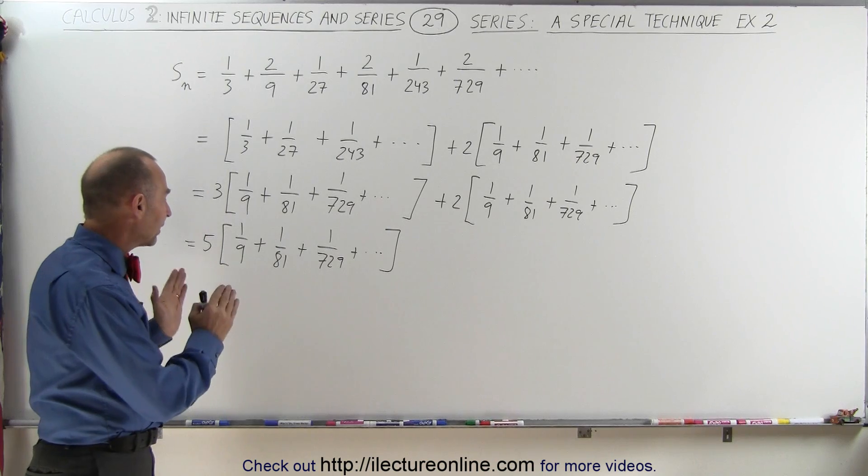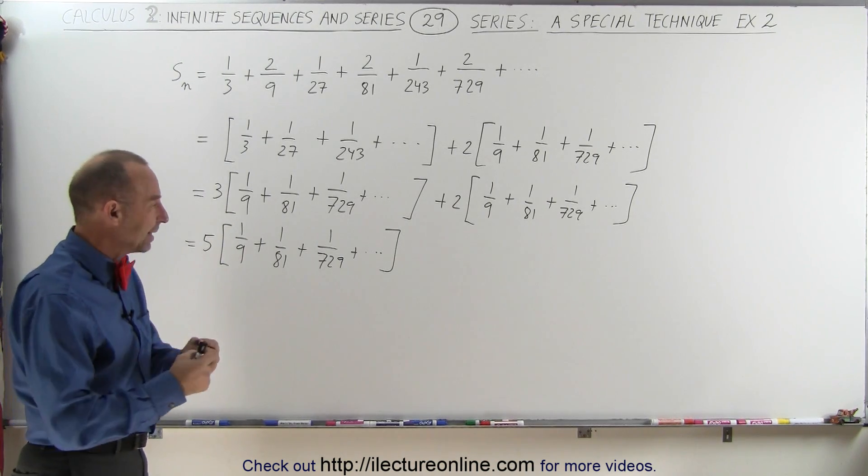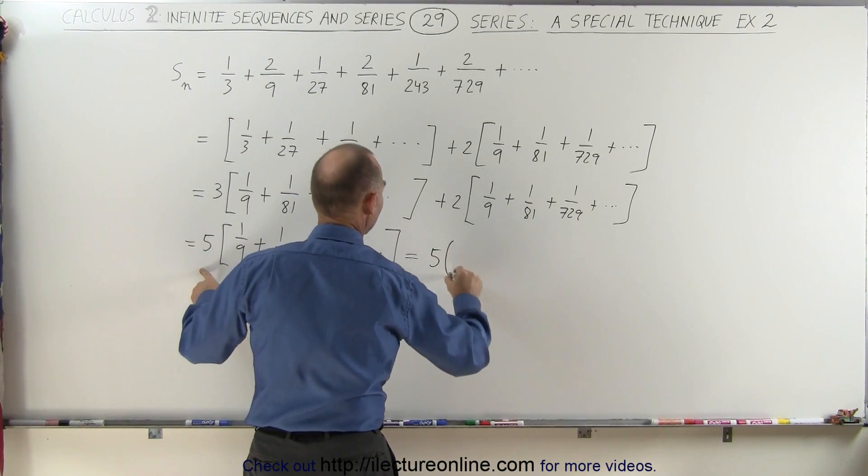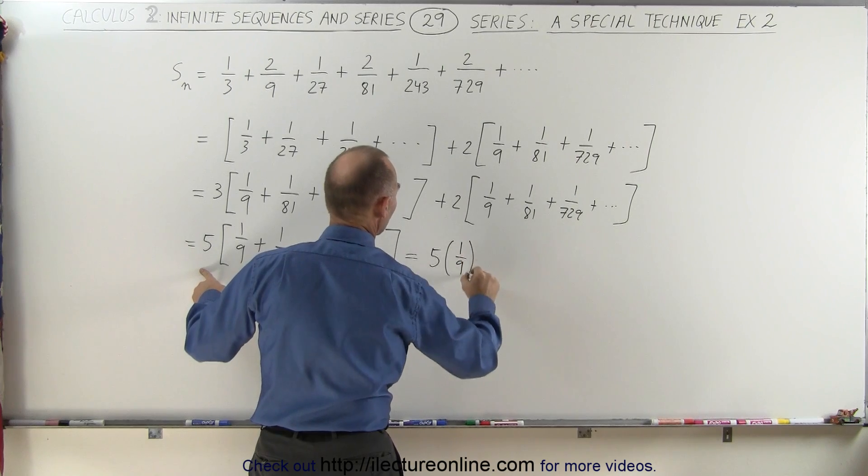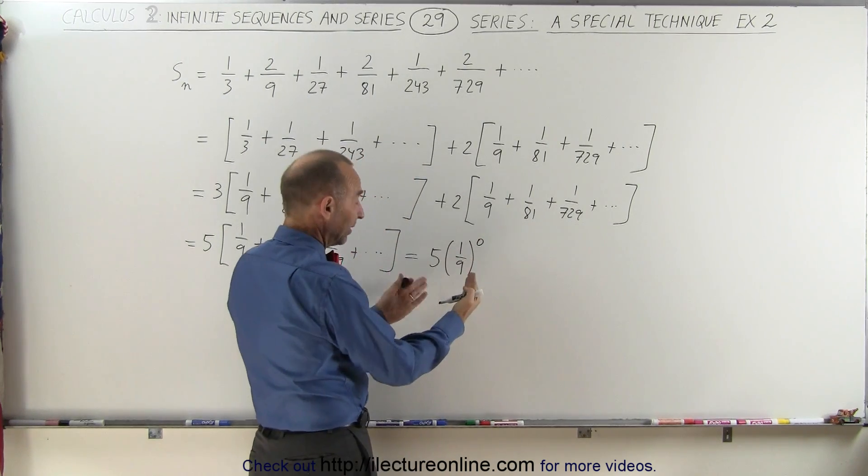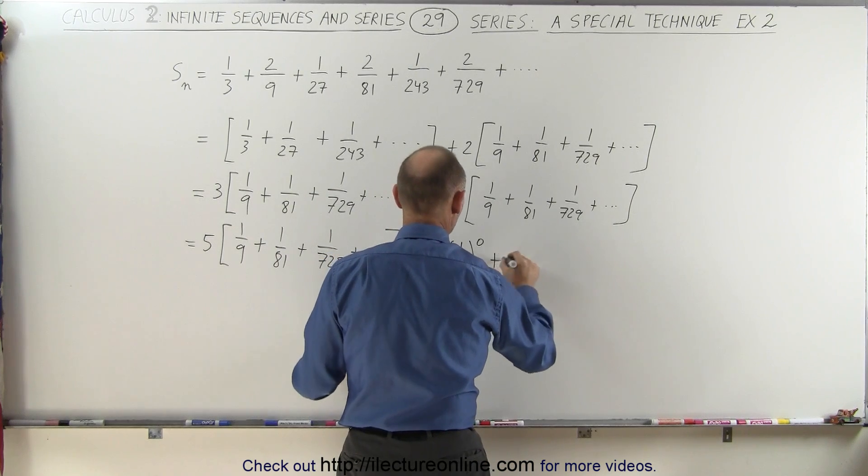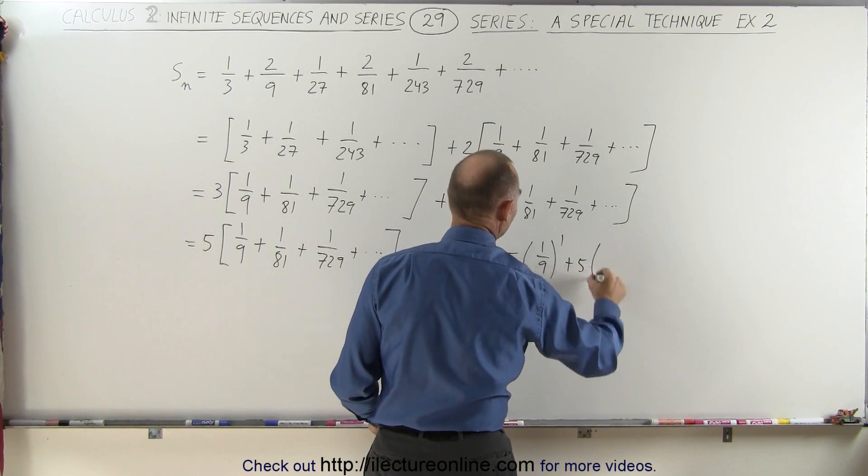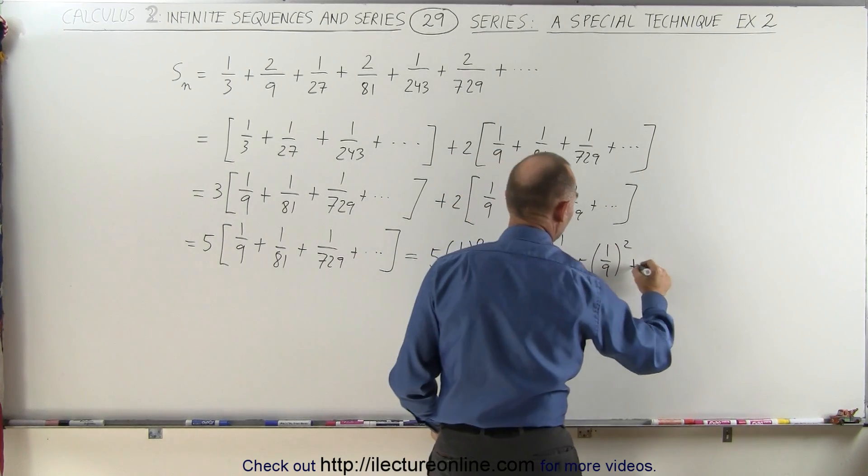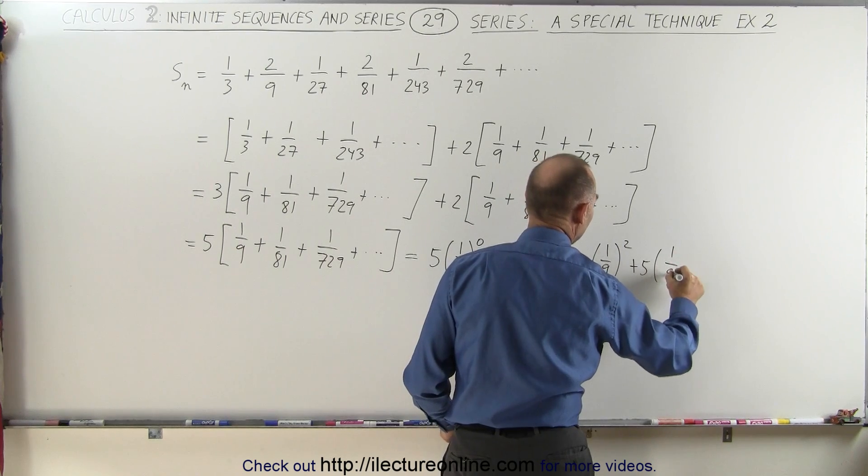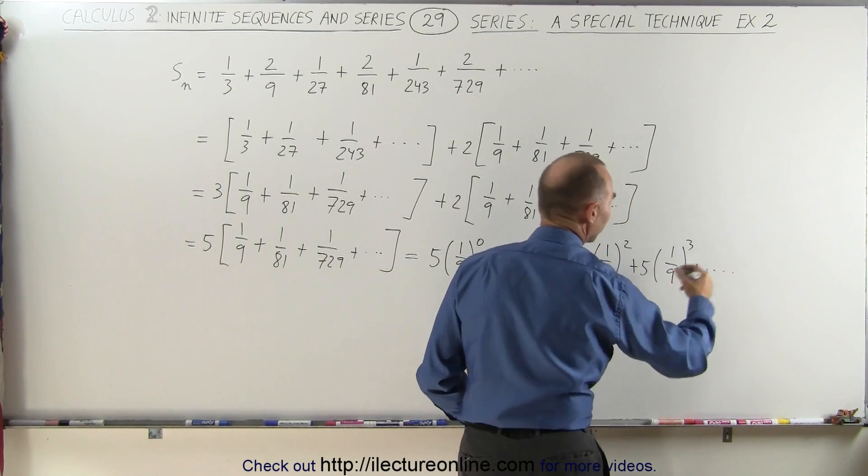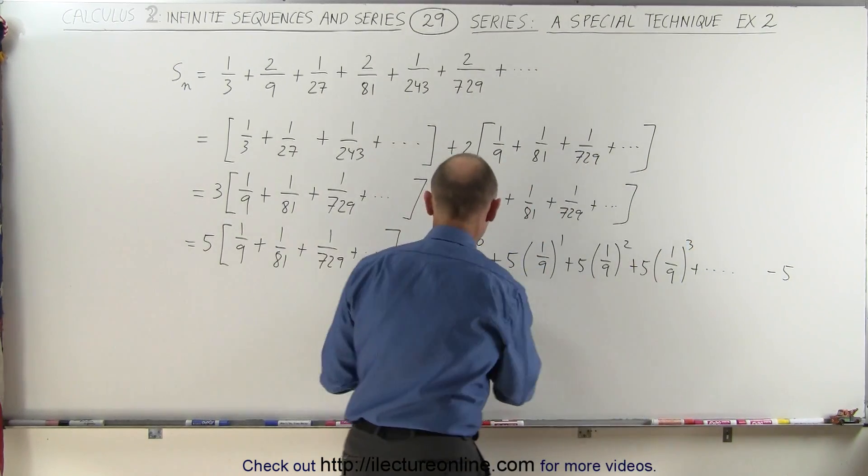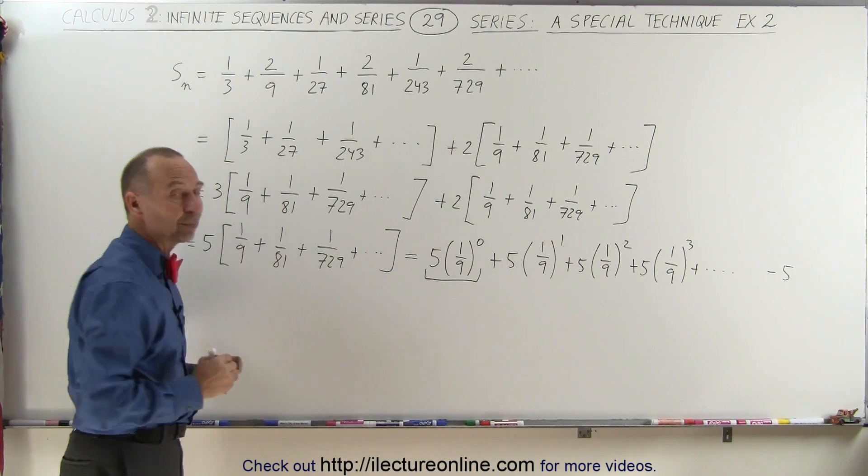And now to show that this is a geometric series we'll have to play the next trick. So we're going to write this as being equal to 5 times 1/9 to the 0 power—of course anything to the 0 power is 1—plus 5 times 1/9 to the 1st power plus 5 times 1/9 to the 2nd power plus 5 times 1/9 to the 3rd power plus so forth to infinity. And at the end we have to subtract a 5 from that because this term does not appear in this particular summation.